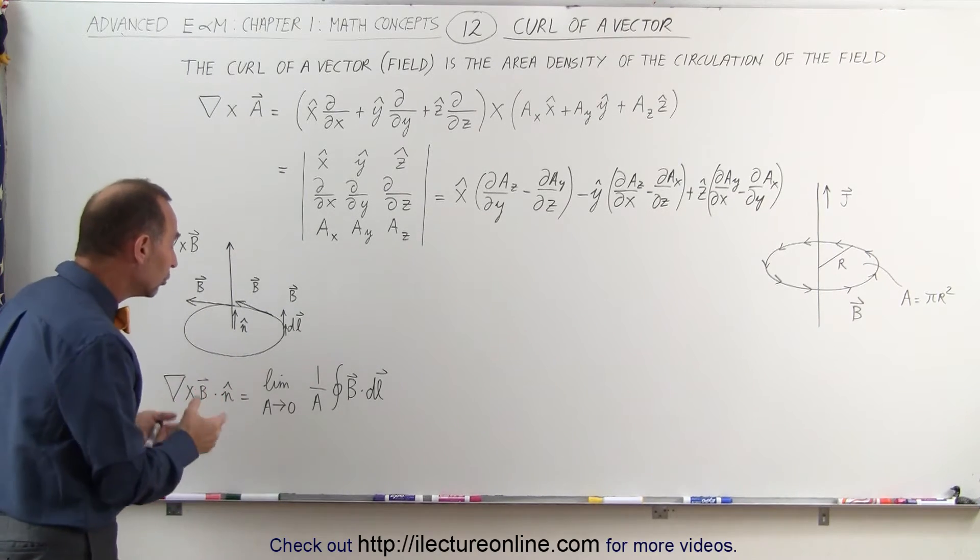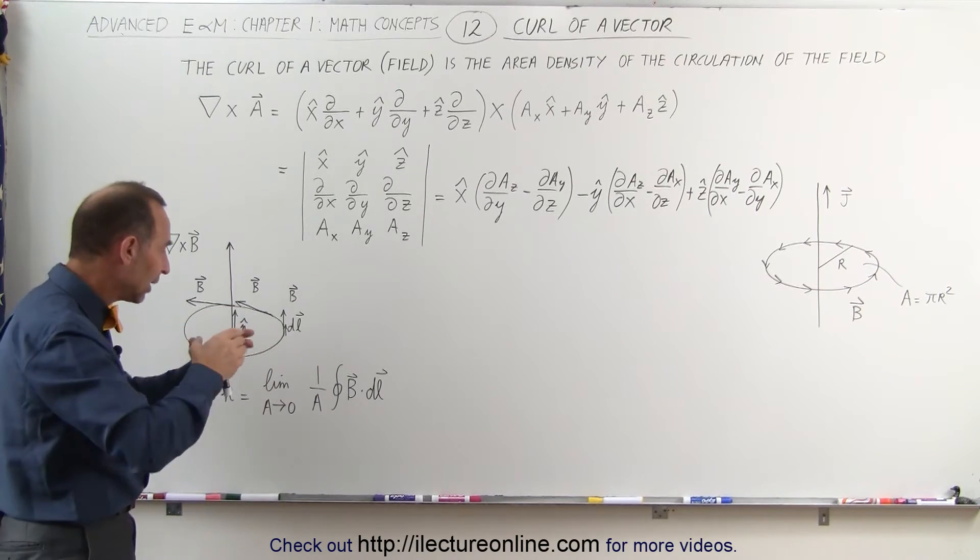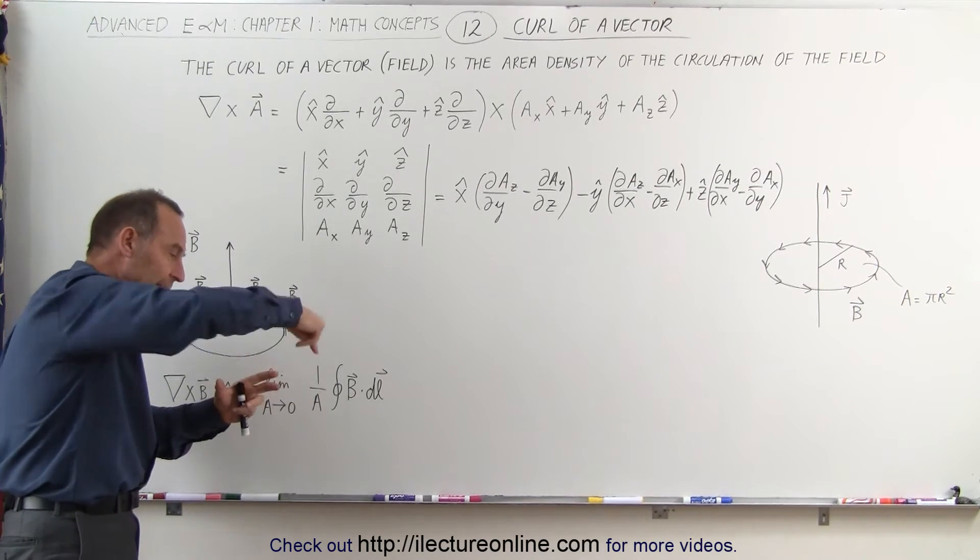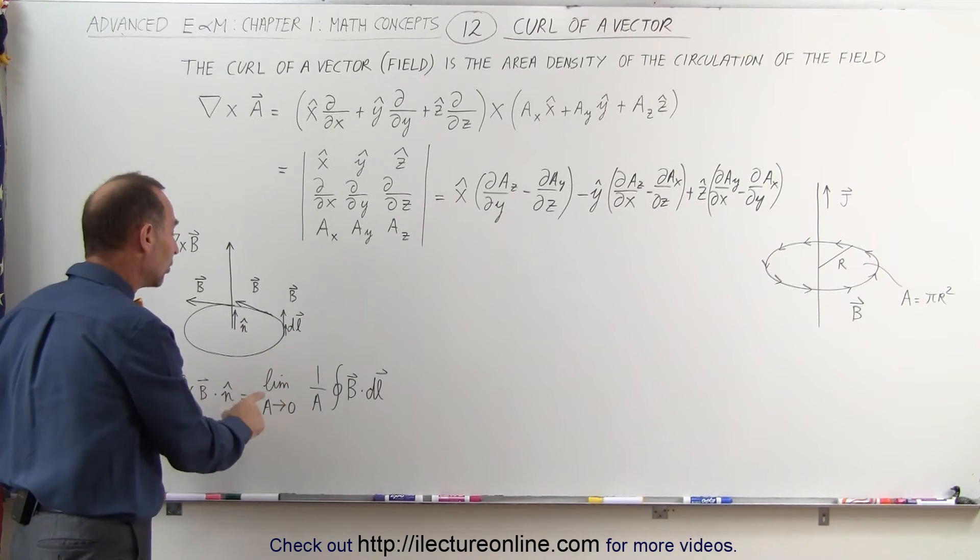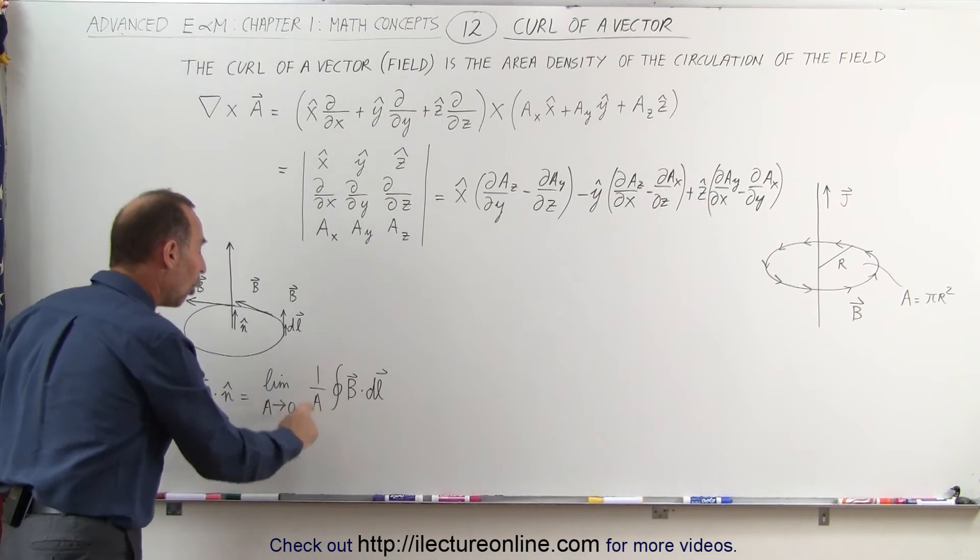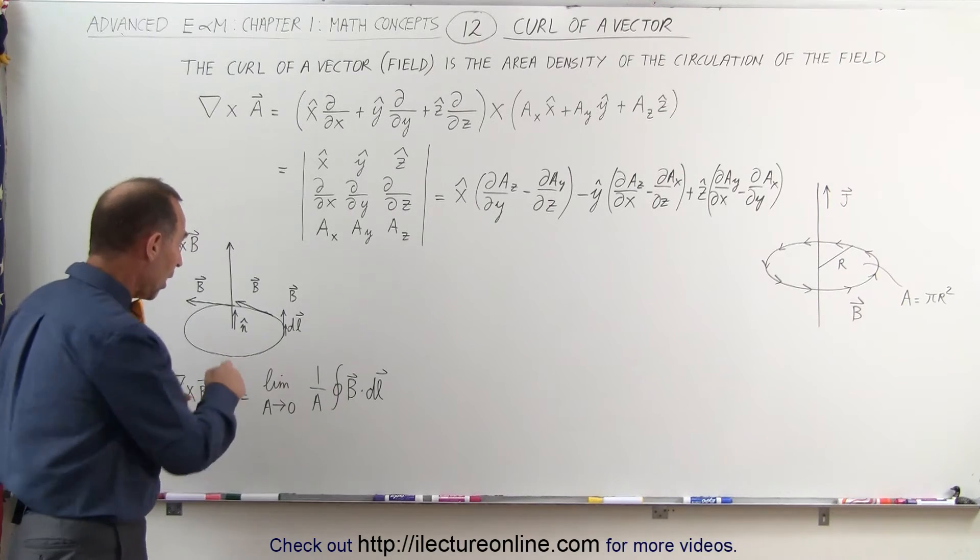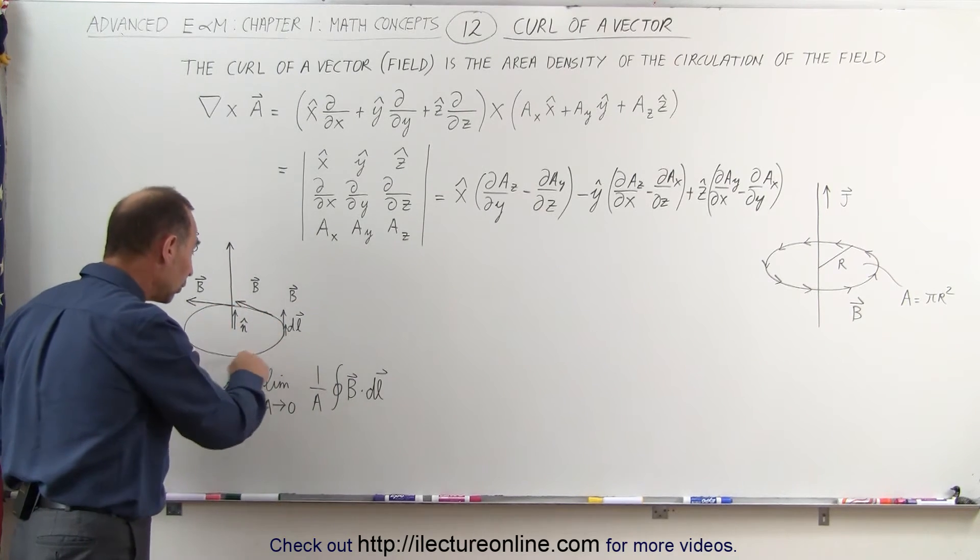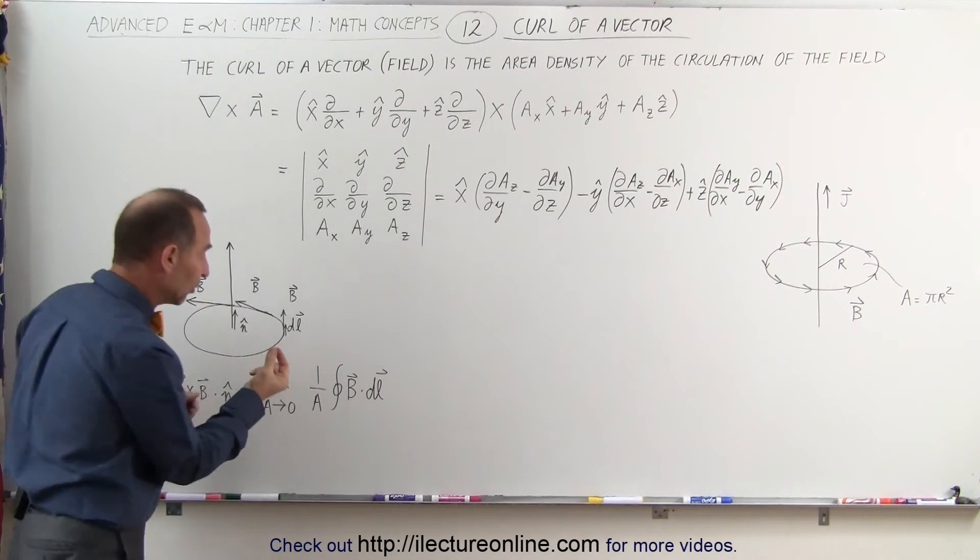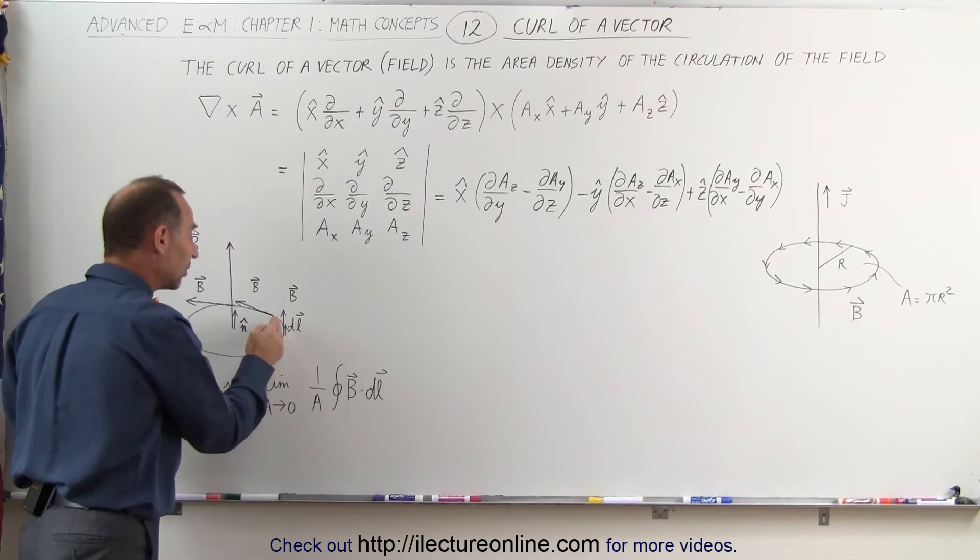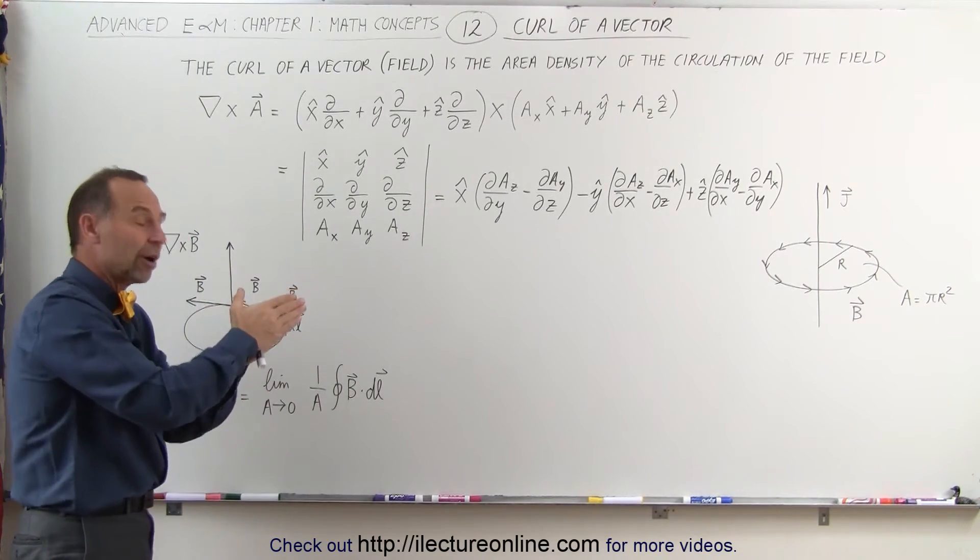And this is then equal to the limit as the surface area of that area that we're considering where the B field circulates around. As we let that go smaller and smaller and smaller, we then multiply that times 1 over the area, so the area becomes really small, times the line integral of the magnetic field as we go around that circle right here, the magnetic field multiplied times the DL. DL is a small vector line segment, and so you can see that the magnetic field and the line segment is always pointing in the same direction.